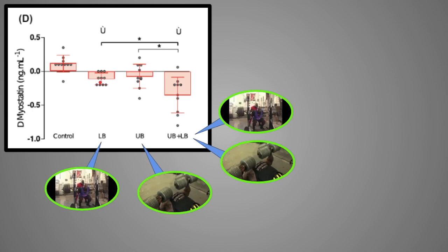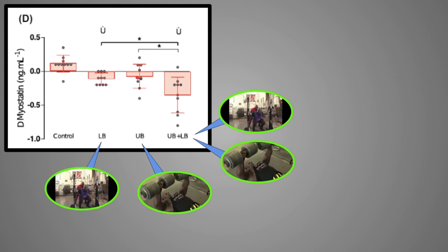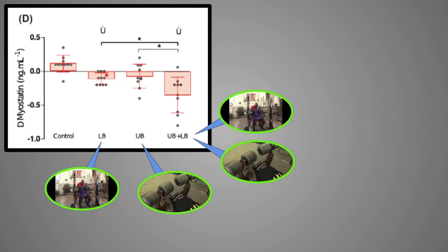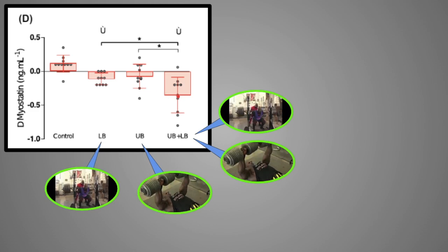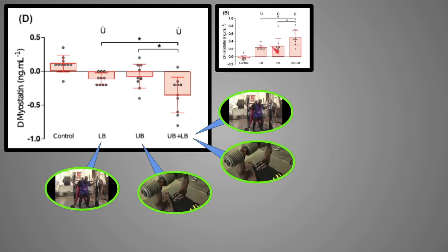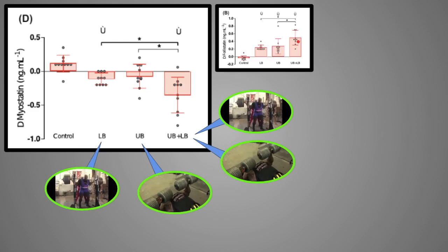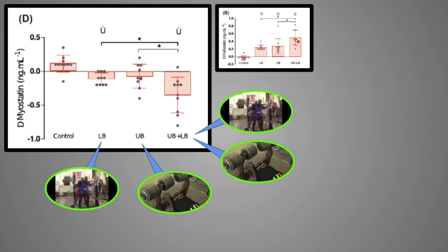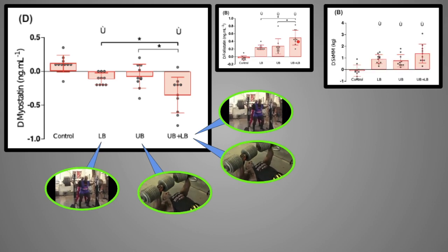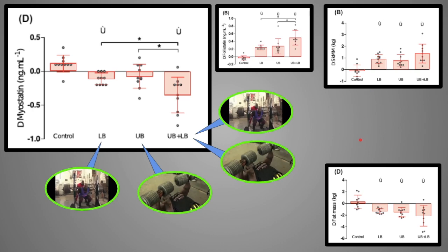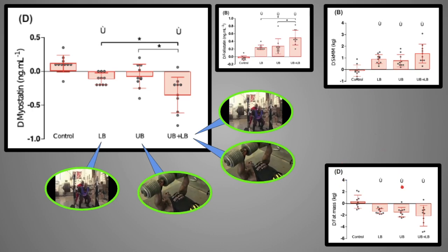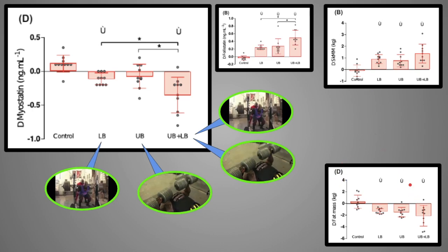The lower body group dropped myostatin to an extent, obviously lower than the upper body group, but it's night and day when you compare both results to the full body group. And obviously, they also had the biggest increase in follistatin, which is the number one myostatin blocker. And the results speak for themselves. When it comes to changing skeletal muscle mass, the full body group built significantly more muscle, and they also lost significantly more fat, as you can see down here in the lower right corner.